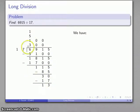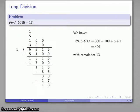So all together I've subtracted 300, 400, 405, 406. So I've subtracted 406 17s all together, and what's left at the end of it is just 13.